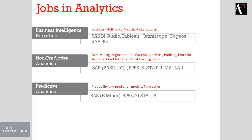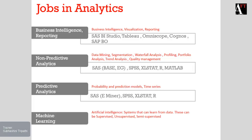There is one more category which a lot of us would be curious about, and that is Machine Learning. Machine Learning is a branch of artificial intelligence and it concerns the construction and study of systems that can automatically learn to improve themselves when they work on data. Machine Learning can be supervised, unsupervised, semi-supervised, etc.